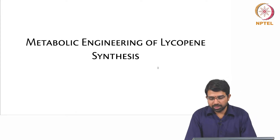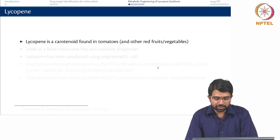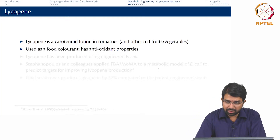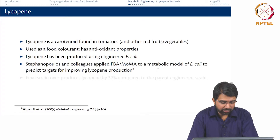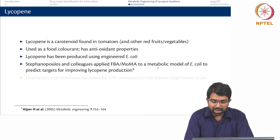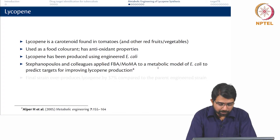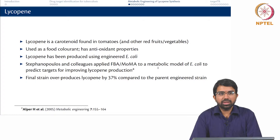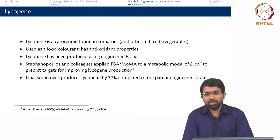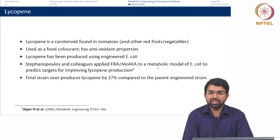Lycopene is an important nutraceutical. It is a carotenoid found in tomatoes and other red fruits. It is used as a food colourant and has antioxidant properties. It has already been produced using engineered E. coli. Stephanopoulos and colleagues applied FBA and MoMA to a metabolic model of E. coli to predict targets for improving lycopene production, and they finally came up with a strain that overproduced lycopene by 37% compared to the parent engineered strain.